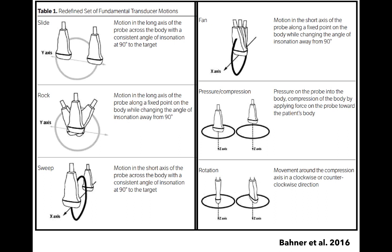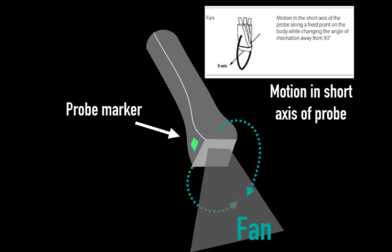So we've talked about sliding, rocking, and sweeping so far. Now to move on to fanning. I want you to imagine the two-dimensional shaped beam coming out of the end of the probe in line with the marker. Instead of moving side to side in a rocking motion, the beam will move out of plane.